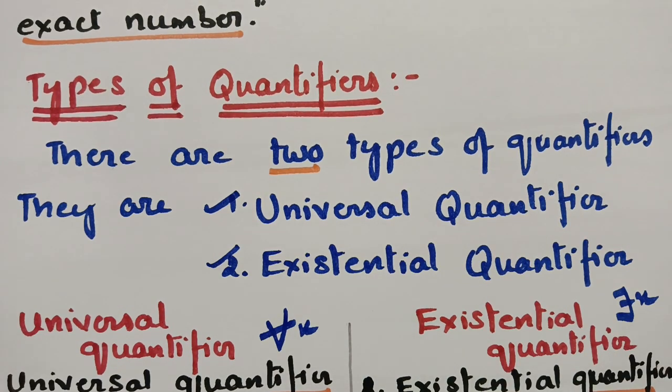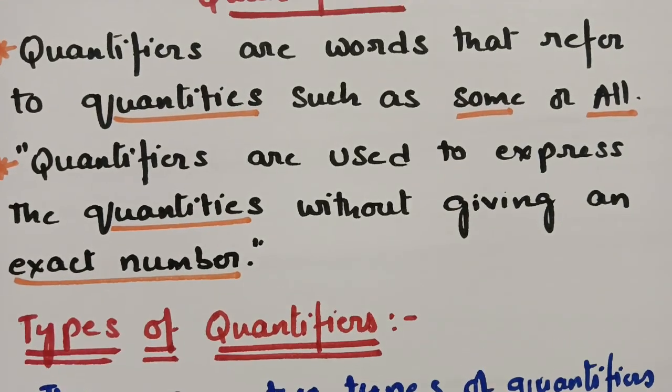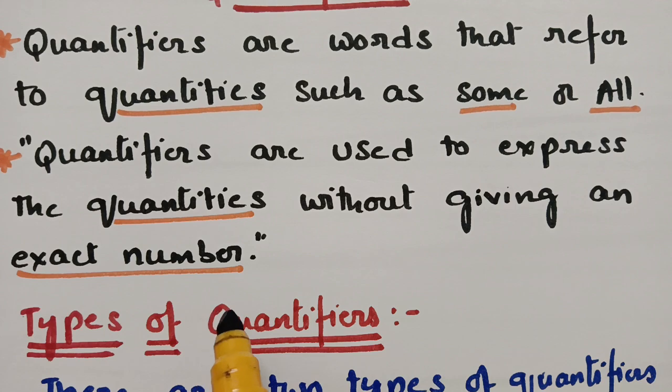So there are two types of quantifiers — universal and existential — and quantifiers express quantities without giving any exact number.